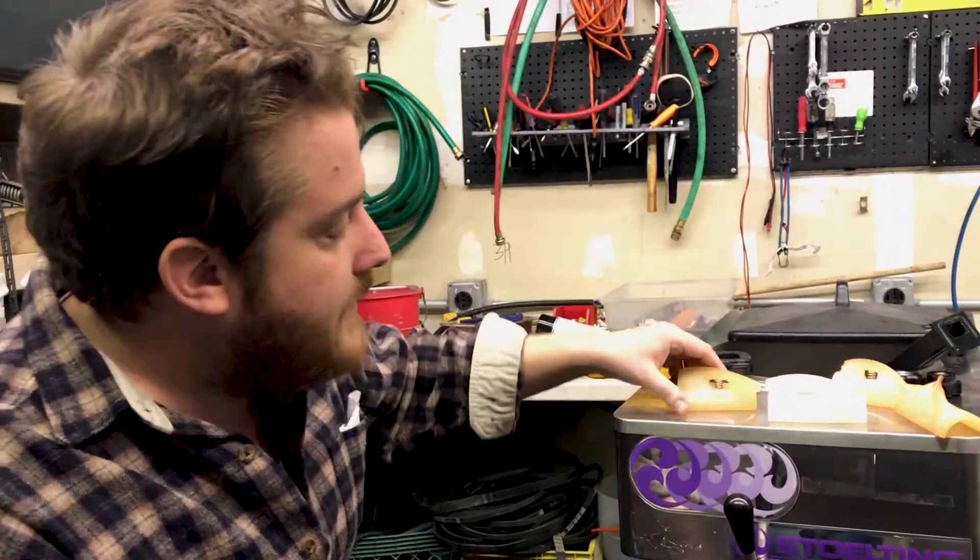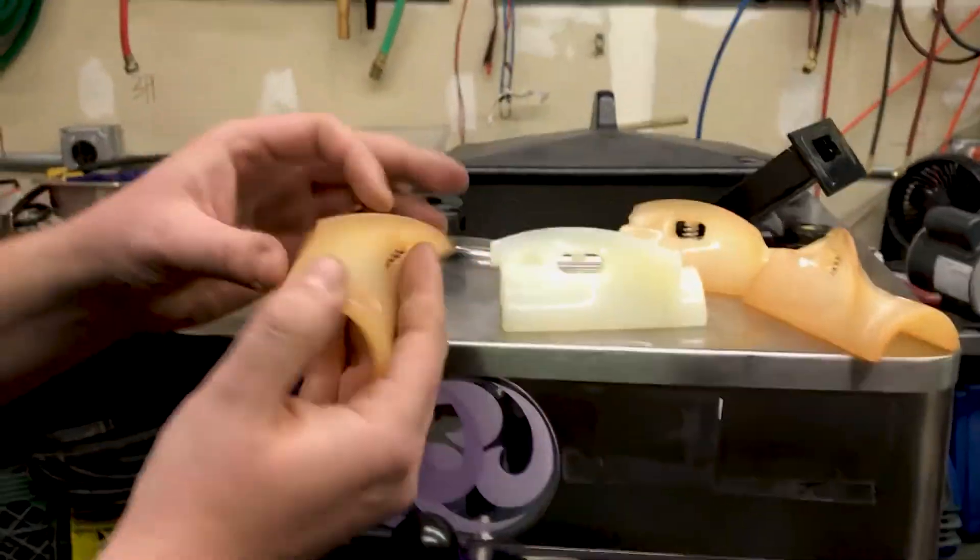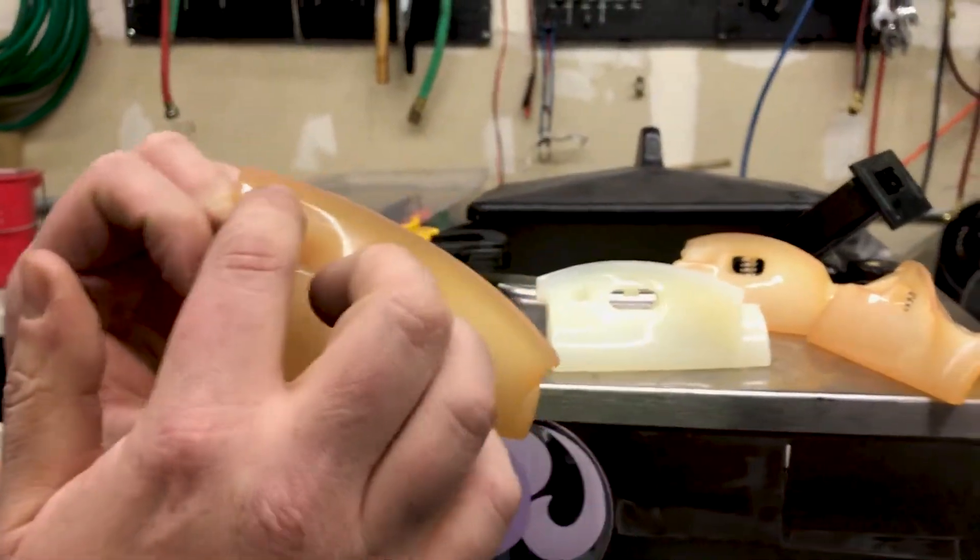One thing I want to draw your attention to is that any ice cream machine is going to have blades. And on Stulting especially, they have what's called a little wear line.